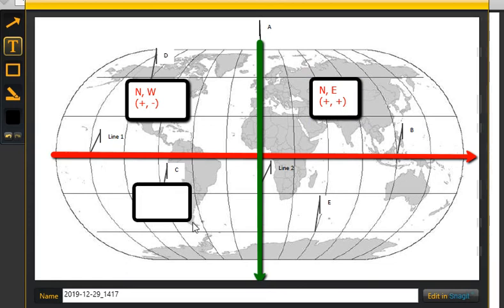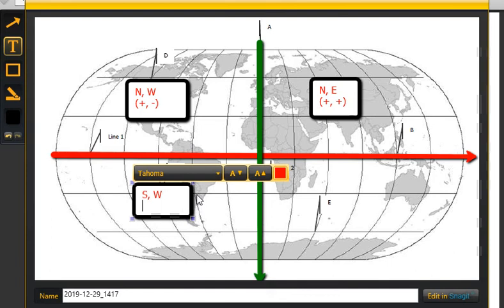This quadrant would be in the southwest. The southern hemisphere would have a negative, and the western hemisphere would have a negative.